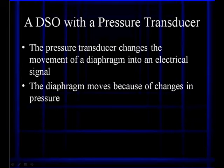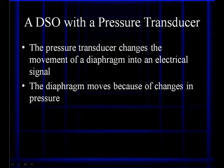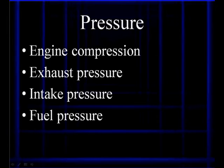Pressure transducers can be used with a lab scope. The pressure transducer changes movement of the diaphragm into an electrical signal. The diaphragm is inside the pressure transducer, and it's going to move and pulse because of changes in pressure. The pressures we're talking about are engine compression, exhaust pressure, intake manifold pressure, and fuel rail pressure.